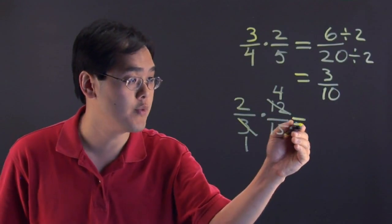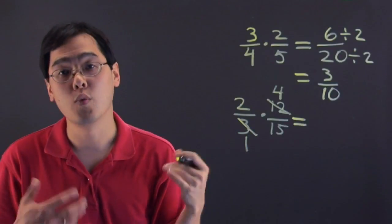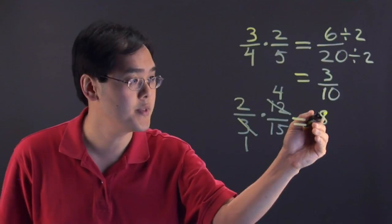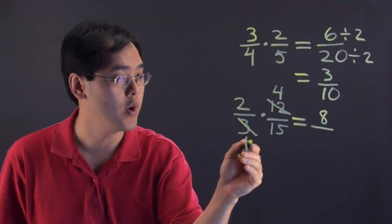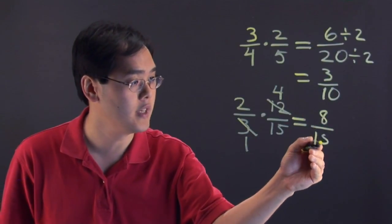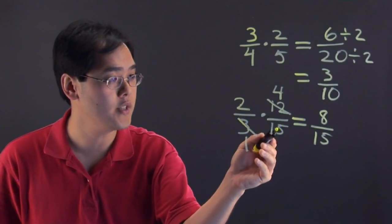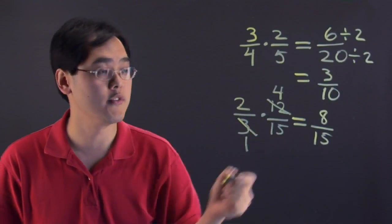So what you have to do now is simply multiply across with the modified numbers. So 2 times 4 is going to give you 8 and 1 times 15 is going to be 15. So in actuality 2 thirds times 12 fifteenths after the reductions gives you 8 fifteenths.